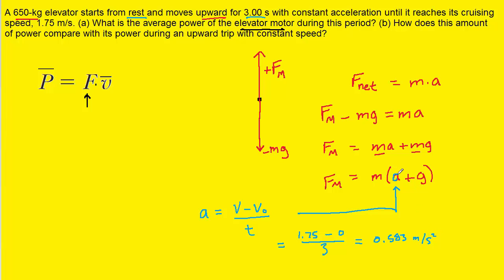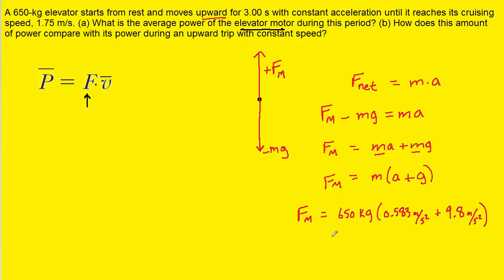Plugging in 0.583 m/s² for acceleration, 9.8 for g, and 650 kilograms for mass, we get a motor force fm of approximately 6.75 × 10³ newtons. This is the force the motor is exerting on the elevator — the value we need in our power equation.